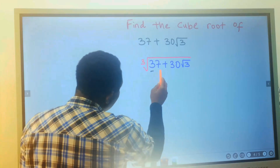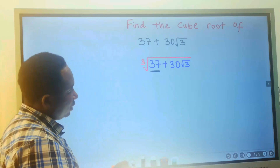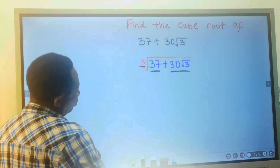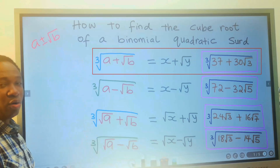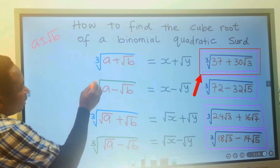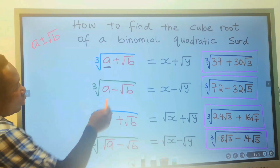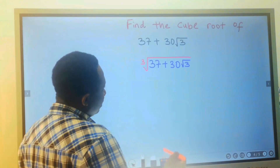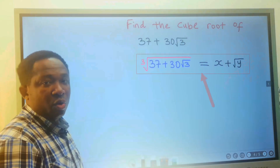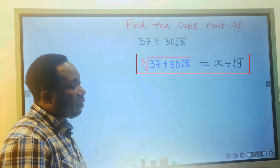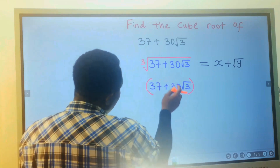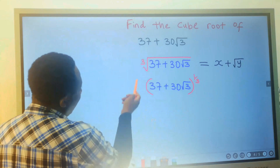Step number two: this first term has no square root with it, but the second term has a square root inside this cube root. We're going to consider among the four conditions. This first one will give us x plus the square root of y when the first term has no square root, with a plus sign. So our answer is x plus the square root of y. We solve for x and y, substitute here, and that becomes our answer. This to the power of 1 over 3 is the same thing as the cube root.